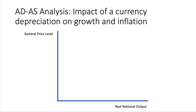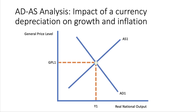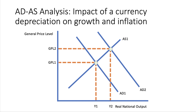Of course we're going to be using an aggregate demand/aggregate supply framework, with general price level on the y-axis and real national output - real GDP - on the x-axis. Let's think about an equilibrium level of GDP at Y1 with a price level of GPL1. Basic analysis is that a currency depreciation improves the price competitiveness of exports, making them cheaper when priced in a foreign currency. An increase in the value of exports leads to an outward shift of aggregate demand, leading to an expansion of aggregate supply, an increase in real national output, and perhaps the risk of an increase in consumer prices. That's a solid, safe, accurate diagram showing the impact of a currency depreciation on the demand side of the economy.